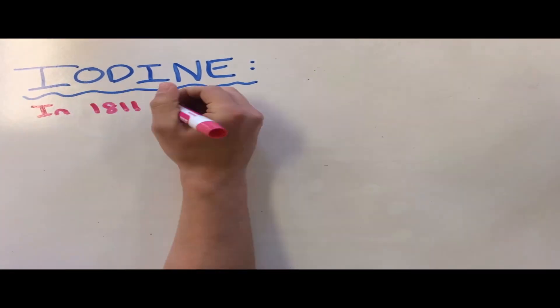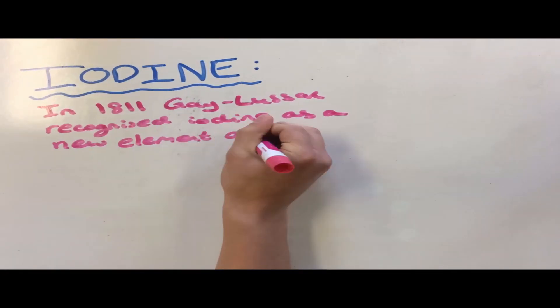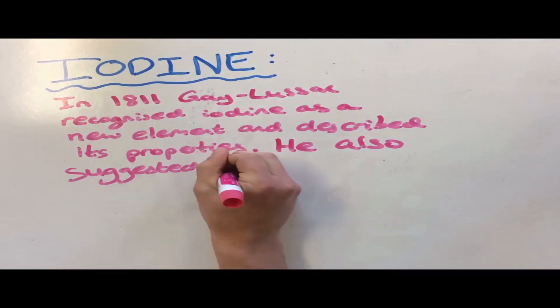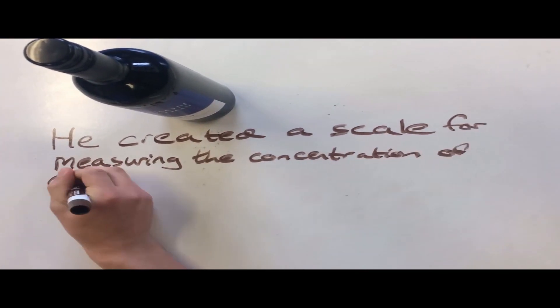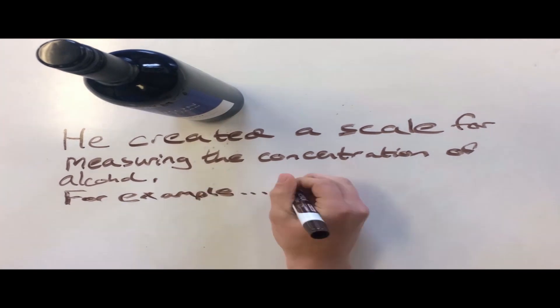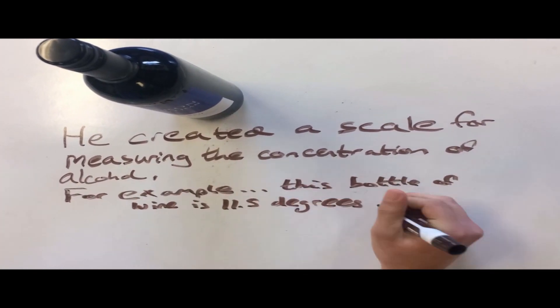He discovered many a thing including Boron and Iodine, but his most important discovery of all was the concentration of alcohol. He had mixtures of water and drink whilst people didn't know what to think. But he could tell how much booze they drank in his units, Degrees Gay-Lussac.